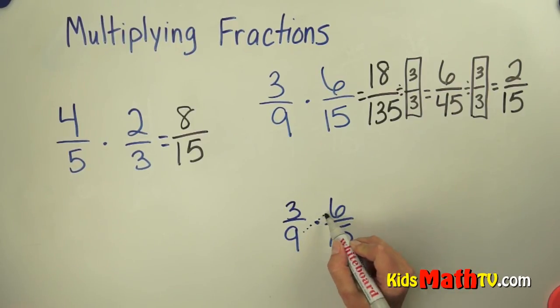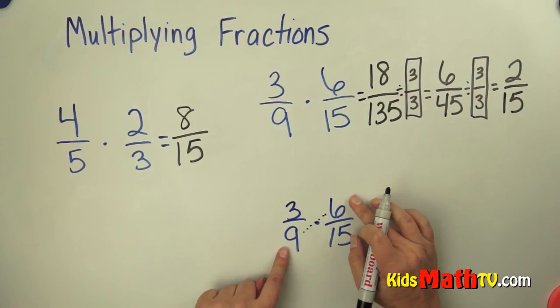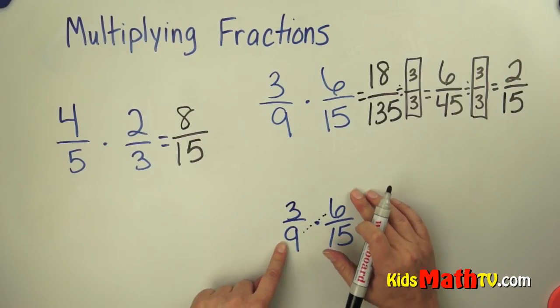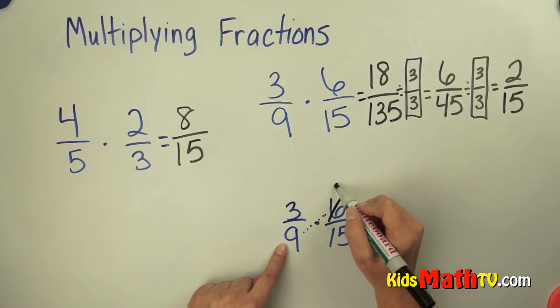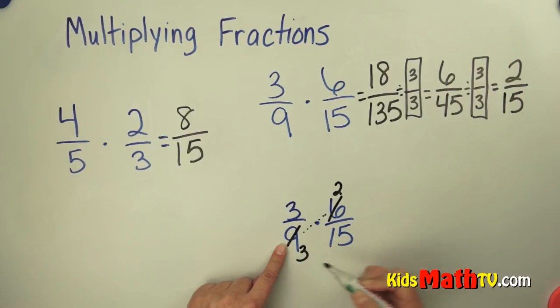So we can look at numbers that are across from each other. Is there a number that will divide 6 and 9? There is. 3 will divide 6 and 9. So I am going to divide both of these numbers by 3. 6 divided by 3 is 2. 9 divided by 3 is 3.